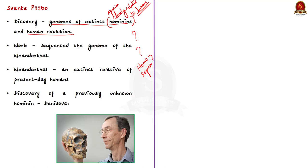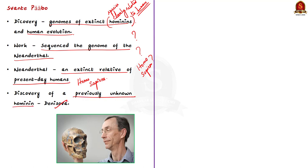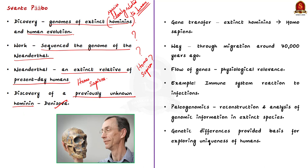Pääbo accomplished something that seems impossible — he sequenced the genome of a Neanderthal. Neanderthals are an extinct relative of present-day humans, who are Homo sapiens. Pääbo also made the sensational discovery of a previously unknown hominin called Denisova. Most importantly, Pääbo found that gene transfer had occurred from these extinct hominins — both Neanderthals and Denisovans — to Homo sapiens. This occurred through migration out of Africa around 70,000 years ago.